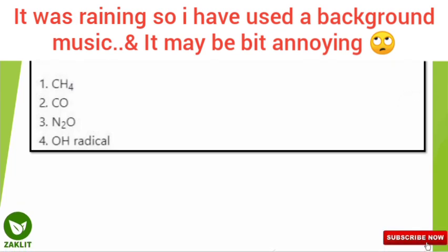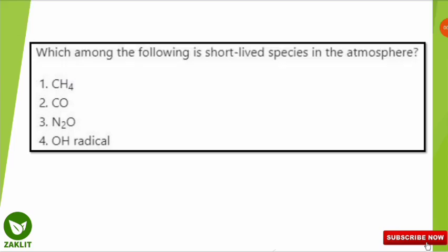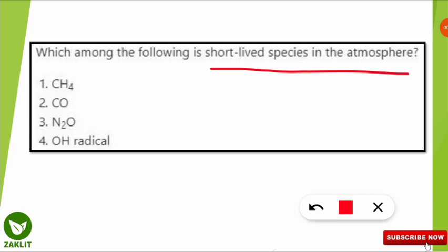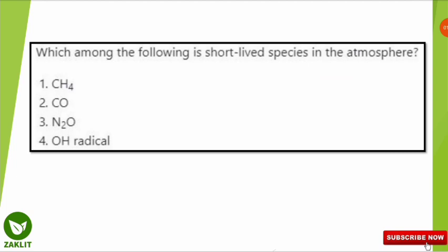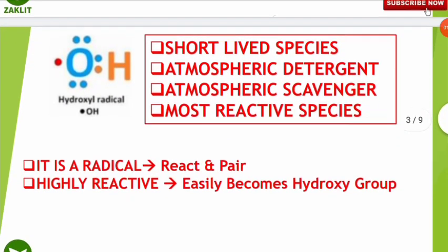The first question is now on your screen: which among the following is the short-lived species in the atmosphere? The correct option is option number four — OH radical is the short-lived species in the atmosphere among the four options. Questions can come in any twisted form related to the OH radical, and it has been seen as one of the frequent exam questions.